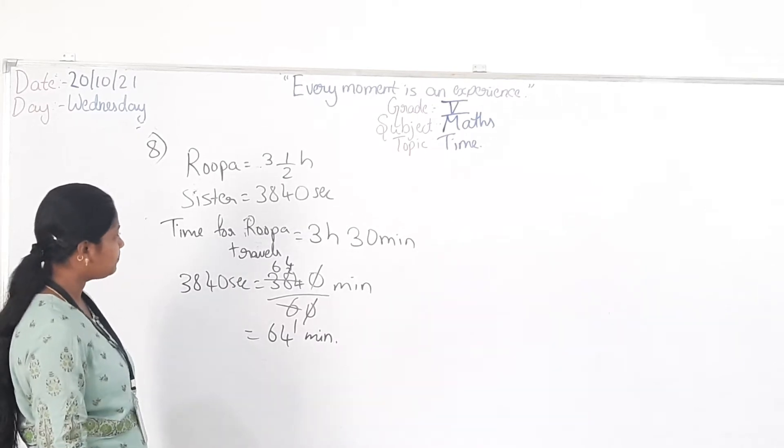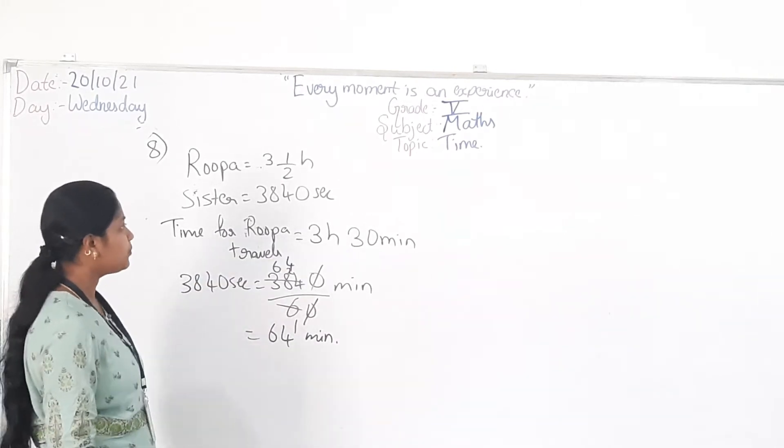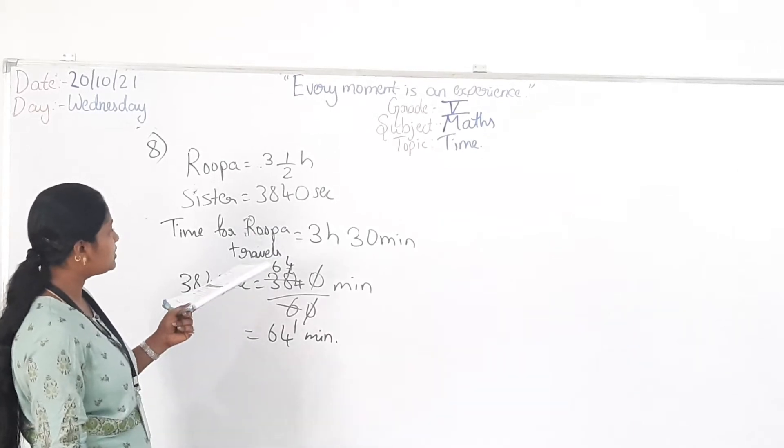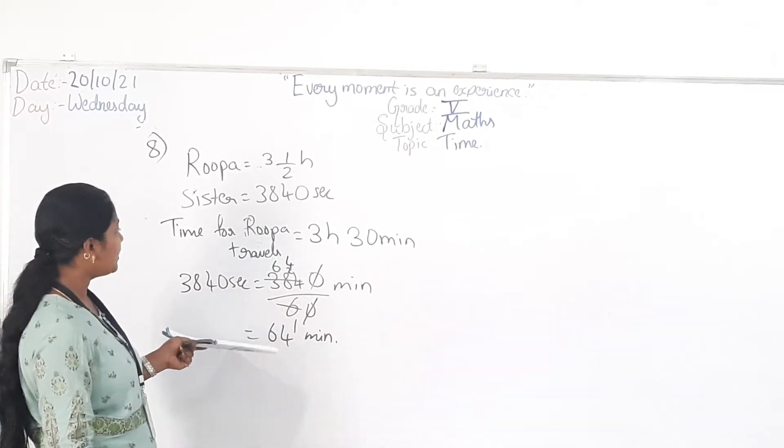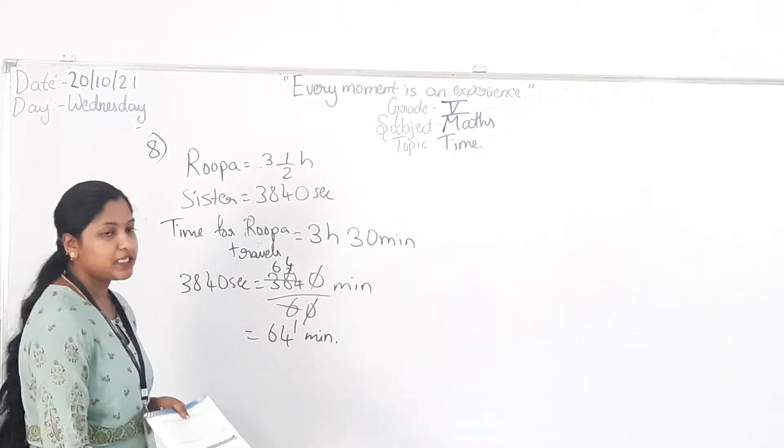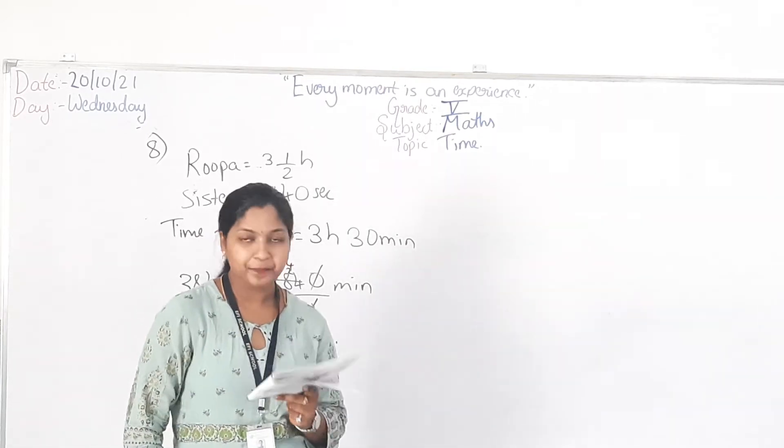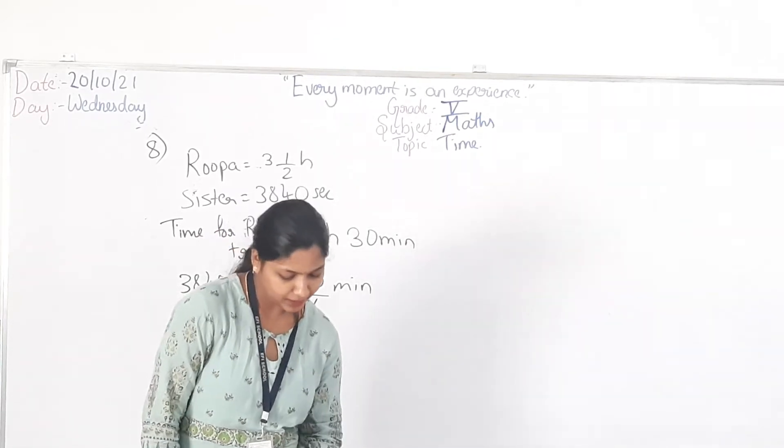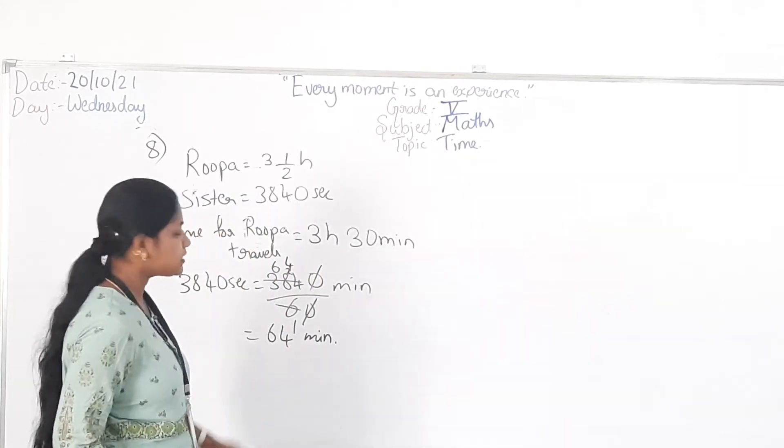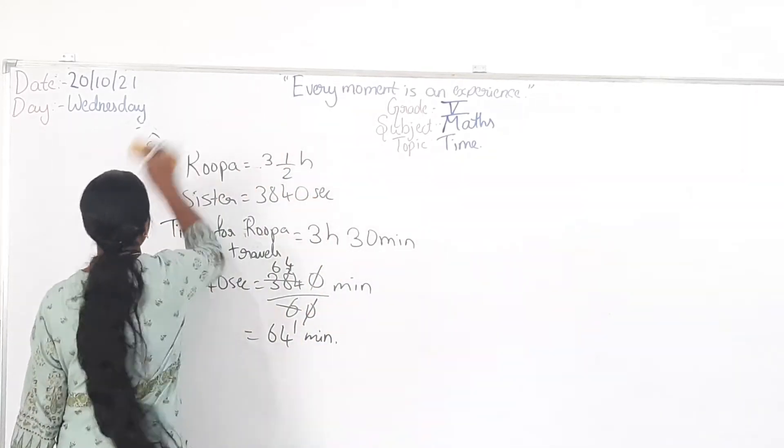So who will travel more? Rupa only travels more than her sister. That is Rupa travels 3 and a half equals 30 minutes. But her sister travels only for 64 minutes. Got it? This is how we find. Let's see example 9.